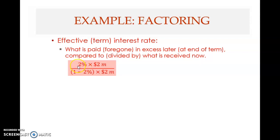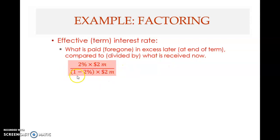By selling the receivables to the factor, you lose two percent - that is what we mean by foregone. You lose two percent of the two million, and this is foregone now. At the later time, you would have collected two million if you had not sold the receivables to the factor. So you don't receive two million - you receive two percent less, which is one minus two percent multiplied by two million.